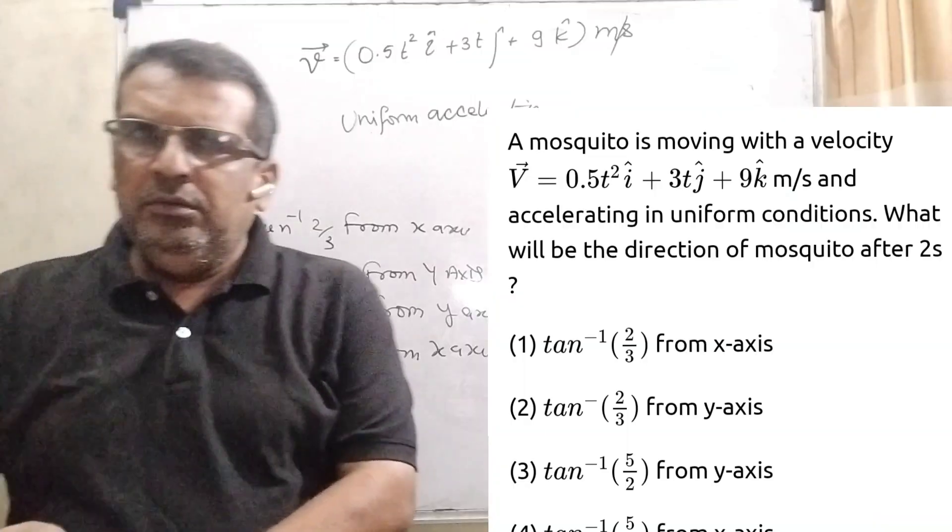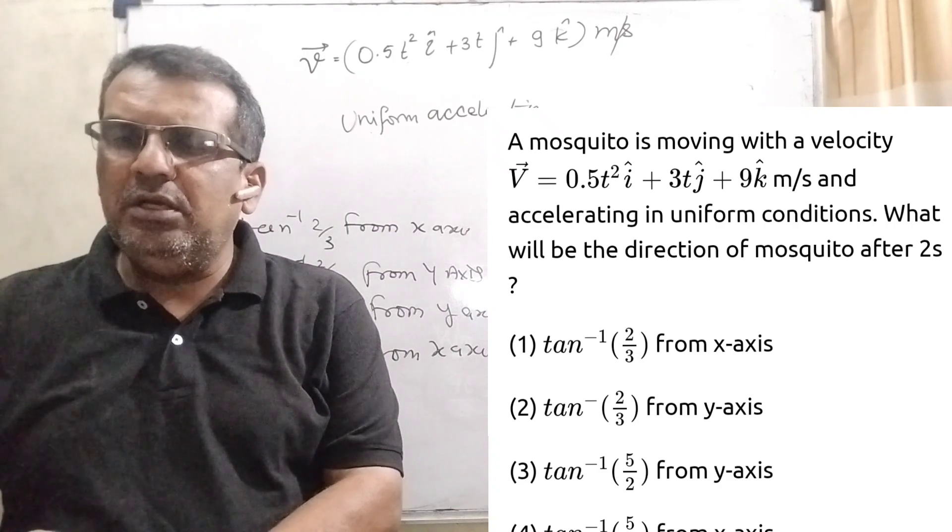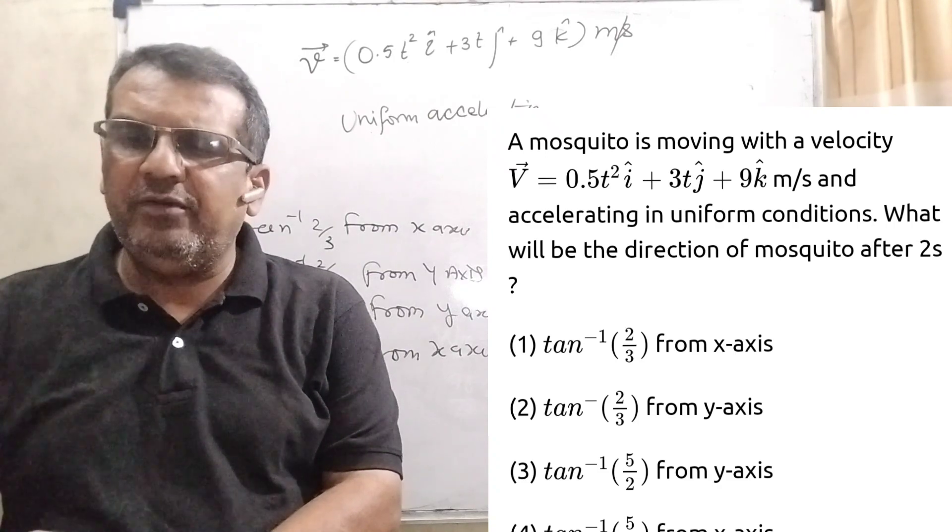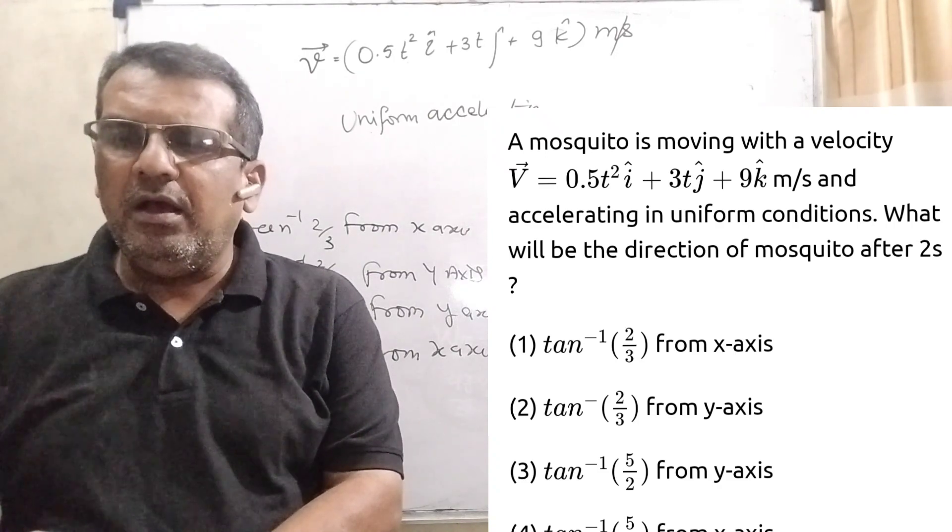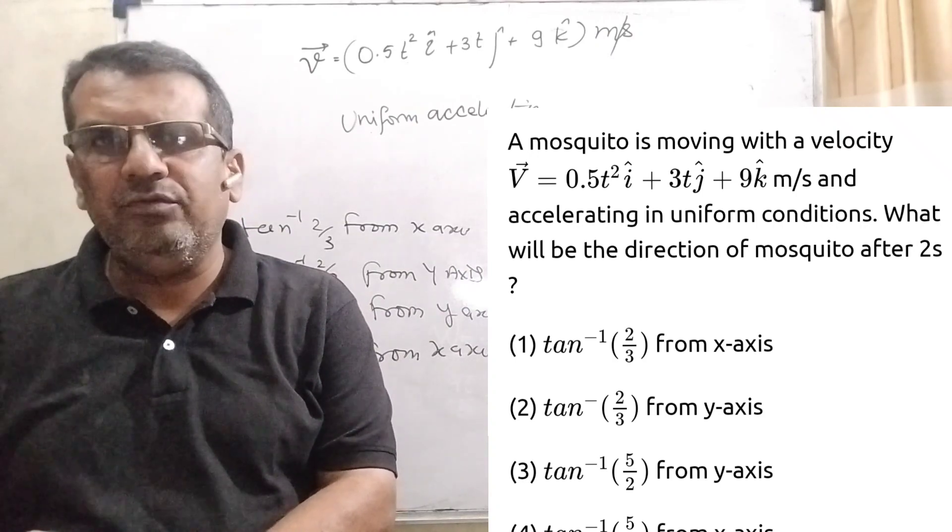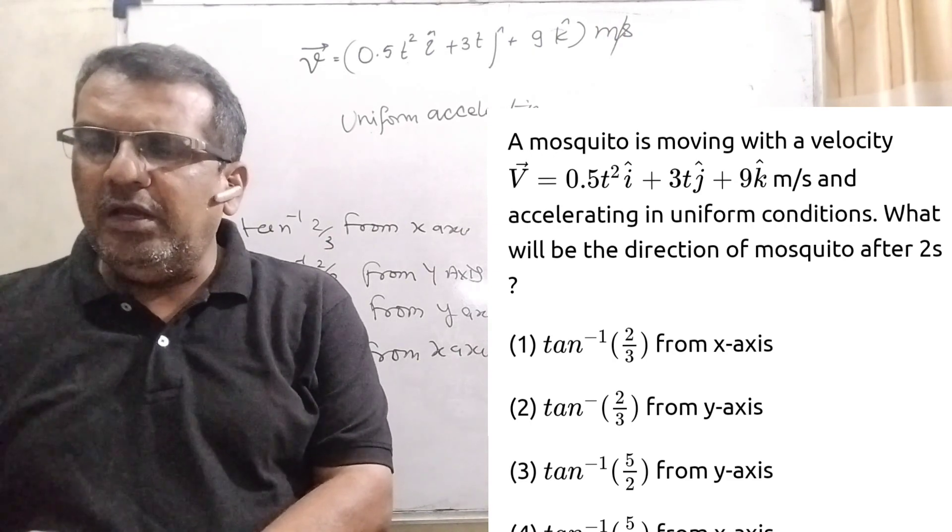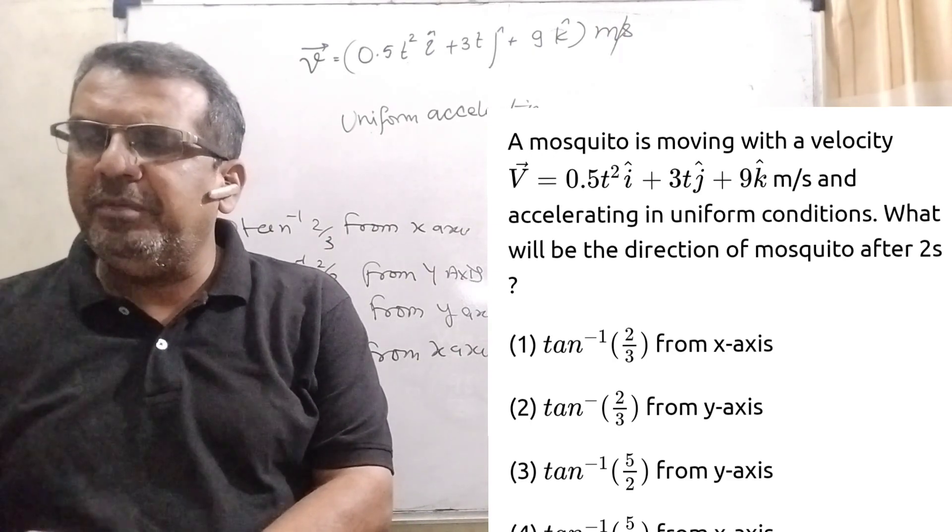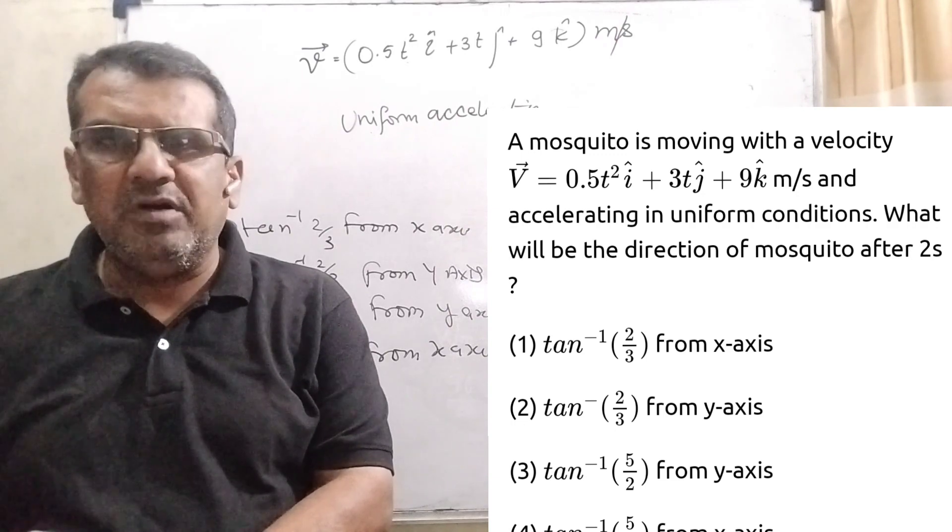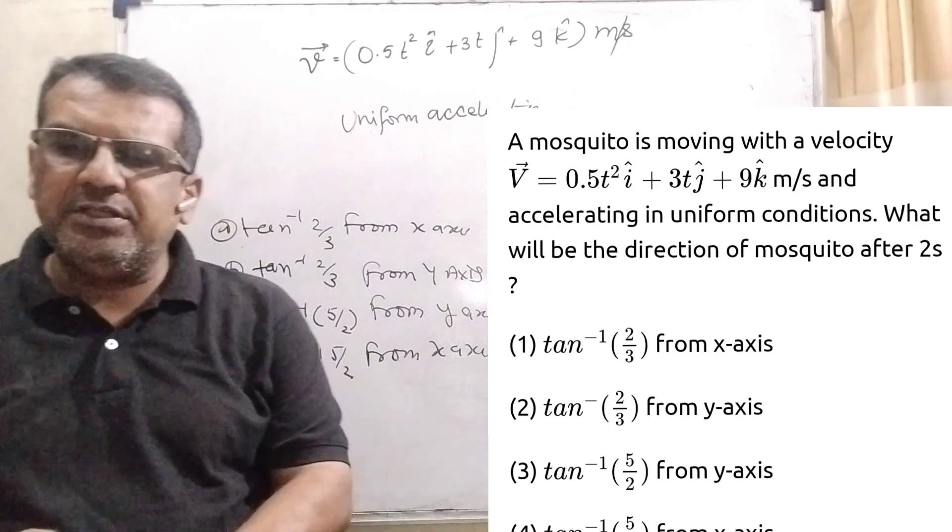Thank you. Now here is the question. A mosquito is moving with the velocity v vector equal to 0.5 t square i unit vector plus 3t j unit vector plus 9k unit vector meter per second. And accelerating in uniform conditions, what will be the direction of mosquito after 2 seconds?